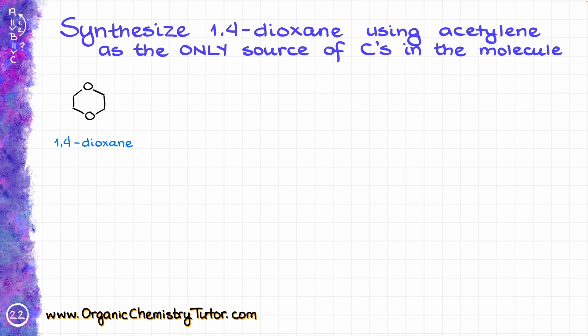1,4-dioxane looks like this, and that is our target molecule, so I abbreviate it TM for short. And acetylene is this one — it is the simplest alkyne, we can also call it ethyne if you want to use the IUPAC name — so that is our starting material, or SM for short.